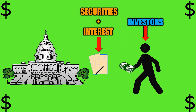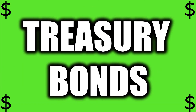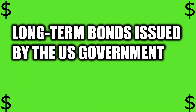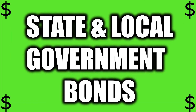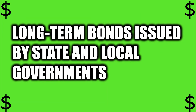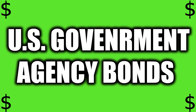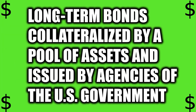In the US, there are three types of government bonds: Treasury bonds — long-term bonds issued by the US government. State and local government bonds — long-term bonds issued by state and local governments. And finally, US government agencies.